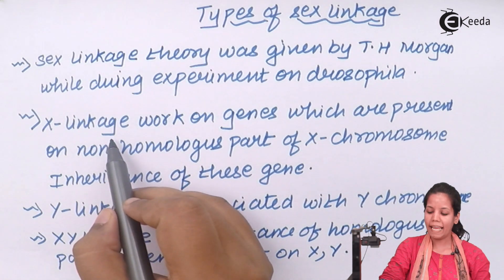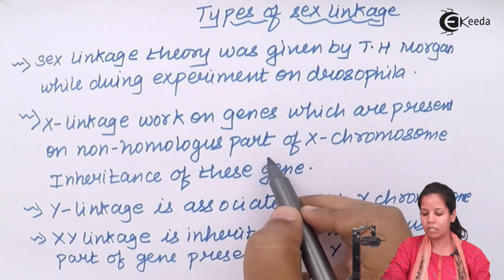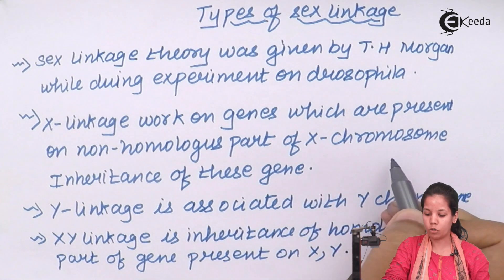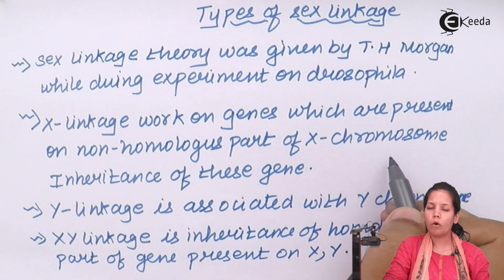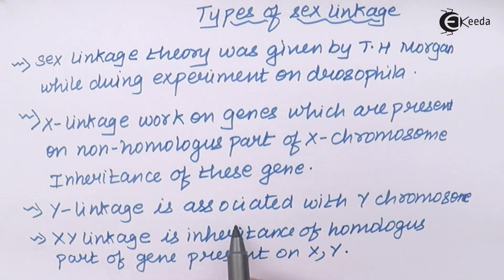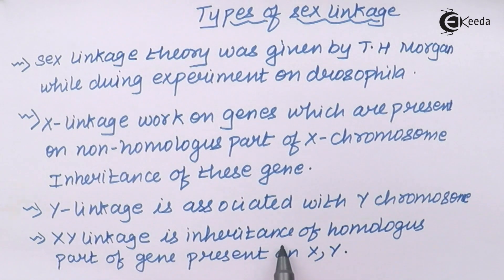X linkage involves genes present on the non-homologous region of the X chromosome, and inheritance of these genes is termed X-linked. Y-linked genes are associated with the Y chromosome, and XY linkage involves the inheritance of genes present on the homologous region of both X and Y chromosomes.